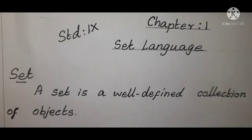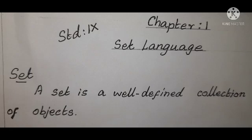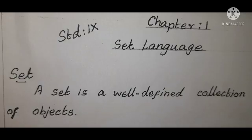Set. A set is a well-defined collection of objects. Well-defined means, inside the sets, what are the elements — you must know. Well-defined collection of objects means that given a specific object, it must be possible for us to decide whether the object is an element of the given collection.